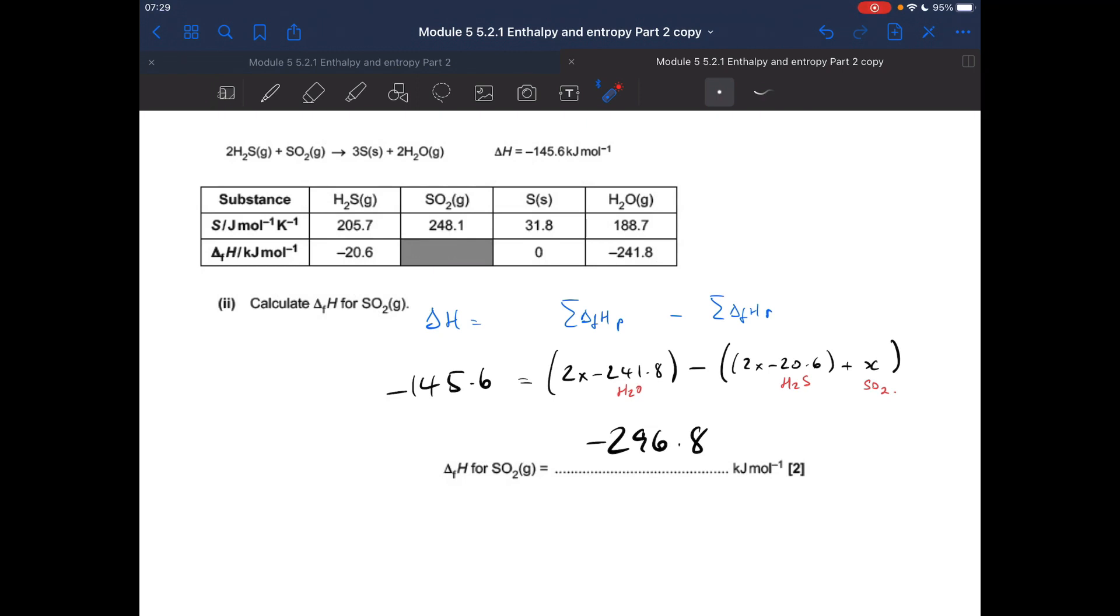So if you put the numbers in, there's the delta H value. So the sum of the enthalpy change of formation of the product, well the products are 3 moles of sulfur and 2 moles of steam. Well it's just going to be the 2 moles of steam because sulfur is an element, has an enthalpy change of formation of zero. So 2 times that value for steam minus the products, 2H2S and SO2, 2H2S and the unknown is the SO2. And then all you've got to do is solve for that X and you should get minus 296.8.